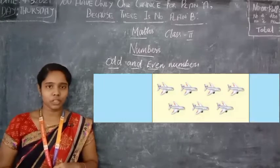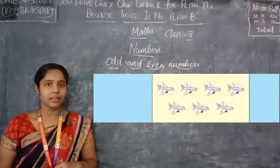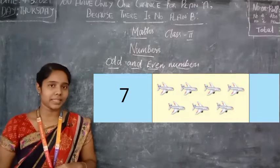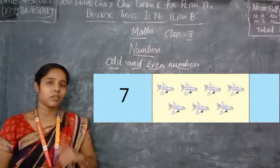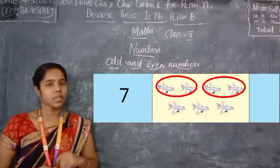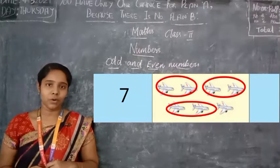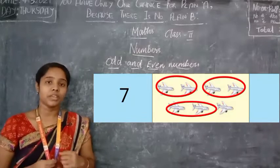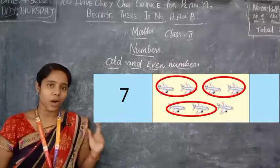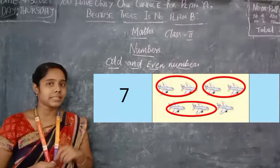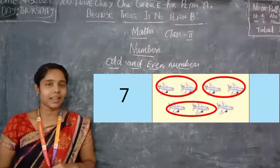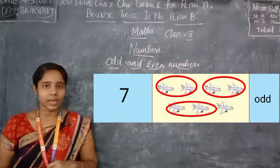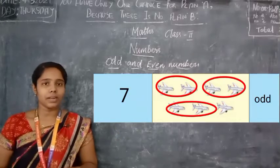Now see the next picture. This is an aeroplane. How many aeroplanes are here? We have seven aeroplanes. Now let us make sets of two. First set, second set, third set — and we have only one remaining, with no other aeroplane to pair it with. So one is remaining. We were able to make only three sets of twos and one aeroplane is still remaining. So the number seven is an odd number, because we have a remaining that cannot complete a set.